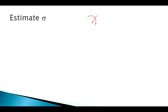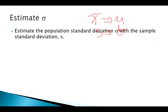So what do we do if we don't know Sigma? We can estimate it. Since X-bar, the sample mean, is a good estimate of mu, what should be a good estimate of our population standard deviation? Our sample standard deviation, S.